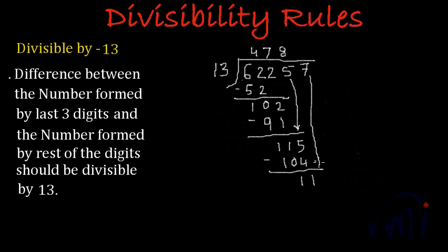And then if I note the 7 down, it becomes 117. And 13 times 9 is 117. And this gives us 0 as remainder. So this proves that 62,257 is divisible by 13. So this was the divisibility rule of 13.